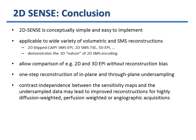In conclusion, 2D-SENSE is conceptually simple and easy to implement. It is applicable to a wide range of volumetric and SMS reconstructions, allowing for a comparison of SMS and 3D EPI without reconstruction bias. Using SENSE might be beneficial for stark contrast differences between the calibration and the accelerated scan. But considering all aspects, it is more a matter of individual taste whether one chooses SENSE over GRAPPA or vice versa, and this also holds for SMS imaging.